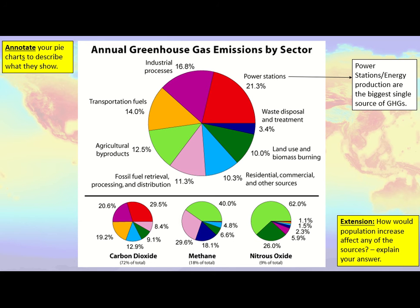The biggest piece of the first pie chart — the red section — is power stations, responsible for 21.3% of all greenhouse gas emissions in that year. So more than a fifth of all greenhouse gas emissions came from power stations — places that generate energy. An example annotation would be: 'Energy production is the biggest single source of greenhouse gas emissions.' Spend a good five minutes annotating the pie charts to identify trends, patterns, and significant contributions.